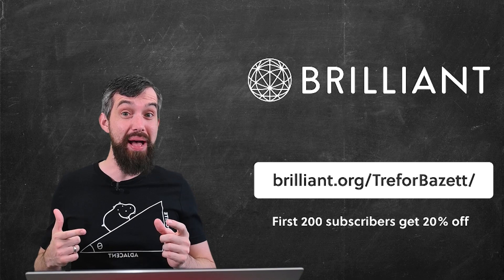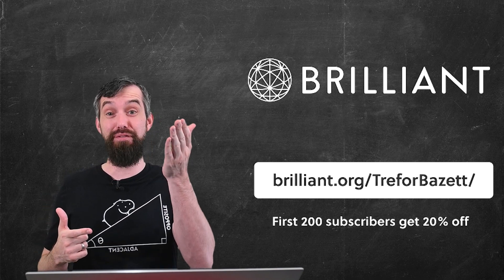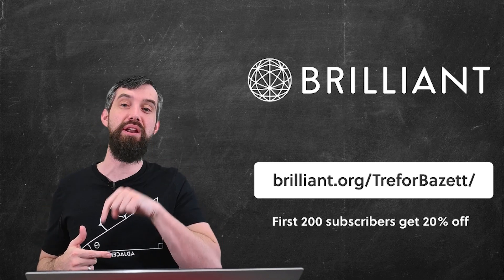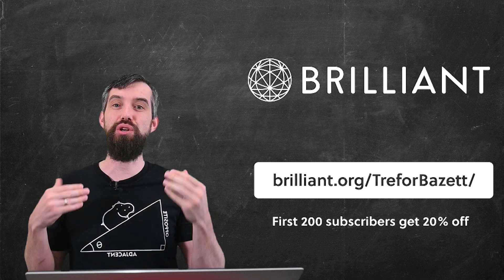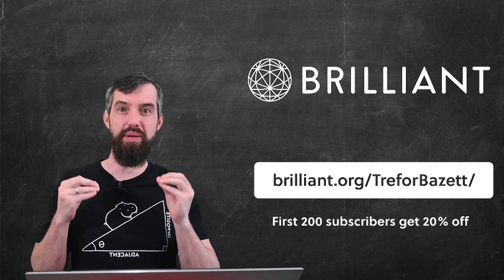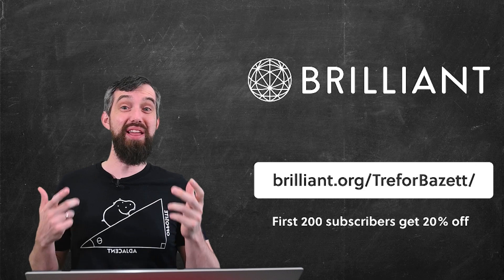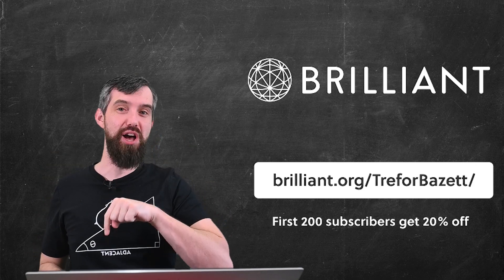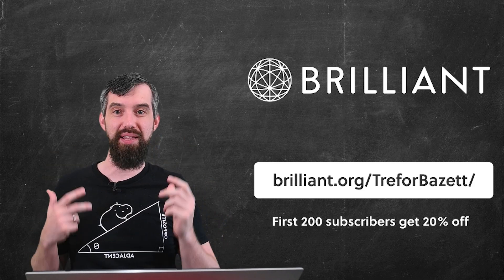So go to brilliant.org slash Trevor Bazit and sign up for free. And in addition, the first 200 people to use the link down in the description are going to get an additional 20% off an annual premium subscription. With that said, if you have any questions about this video, leave them down in the comments below, and we'll do some more math in the next video.